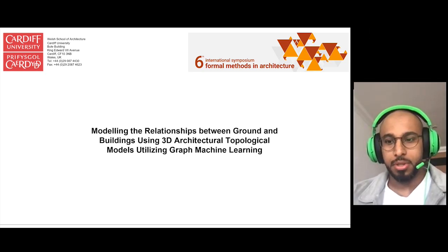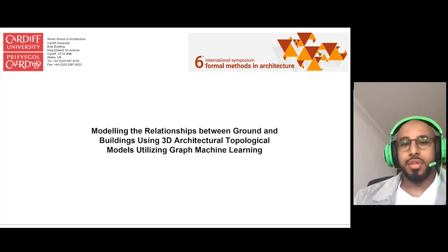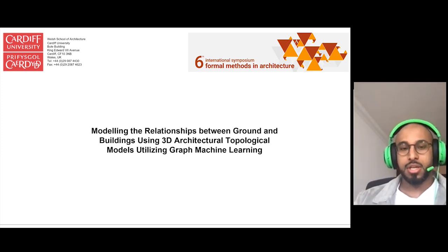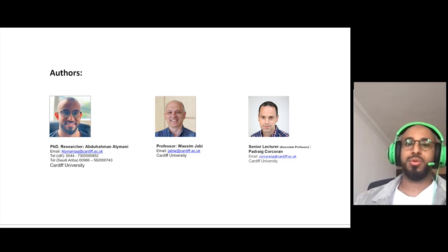This paper is ongoing PhD research that I'm doing at Cardiff University. I think it's the last piece of the research, the PhD research. Modeling the relationship between ground and building using 3D architecture topology models, utilizing graph machine learning. The authors are me, a PhD student at Cardiff, and my two supervisors, Professor Wasim Jabi, who Deva has explained, and as a third supervisor, Padraig Corcoran, who is senior lecturer in computer graph machine learning.